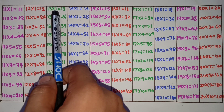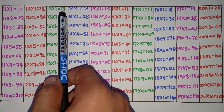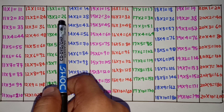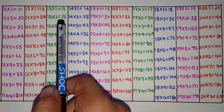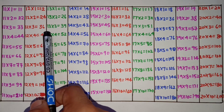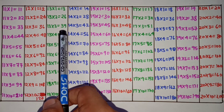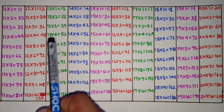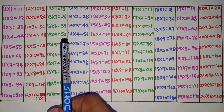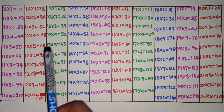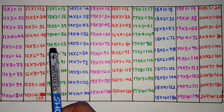13 1s are 13, 13 2s are 26, 13 3s are 39, 13 4s are 52, 13 5s are 65.